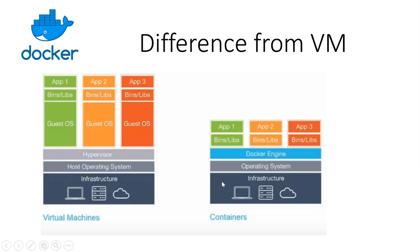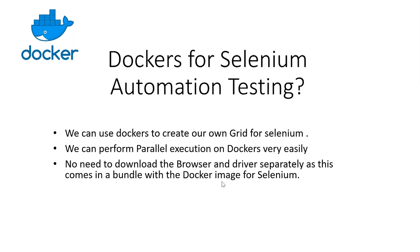Now why are we talking about Docker in automation? Docker gives advantages we can use in automation — through Docker we can create our own Selenium grid. There's no need to find separate machines, set up a grid, and do parallel execution separately. I can create my own Selenium grid on Docker and achieve parallel execution. Besides that, I don't have to download any browser or driver separately because these are all bundled into a Docker image. These are the advantages of using Docker for automation, and in the next video I'll show you how to practically do it.